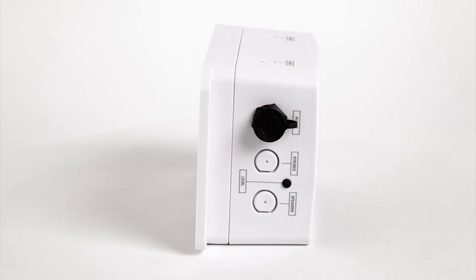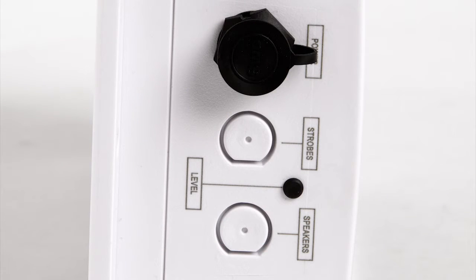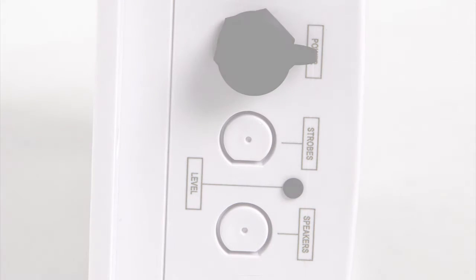First, let's get familiar with the VNS2200 connections. On the left side, there is the DC power input, two strobe light outputs, two PA speaker output, and speaker level adjustment pot.